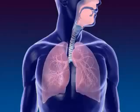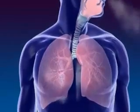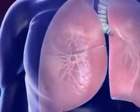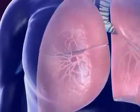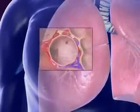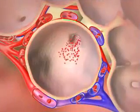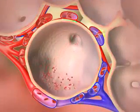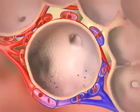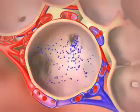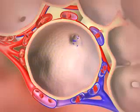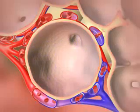Oxygenated air goes from the nose to the pharynx, larynx, trachea, bronchus, and alveoli. By the process of diffusion, oxygen in the air moves from the alveoli to the capillaries. Carbon dioxide moves from the capillaries to the alveoli and is exhaled. This process is called respiration.